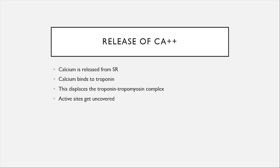An action potential along the muscle membrane causes calcium to be released from the SR, which is the sarcoplasmic reticulum. These calcium ions bind immediately to troponin, causing the troponin-tropomyosin complex to move into the groove between the actin strands. This movement uncovers the active sites, and now the interaction of the myosin heads with the actin sites can be made.